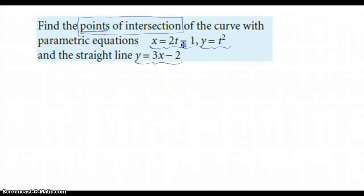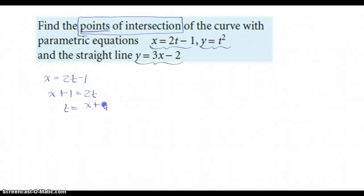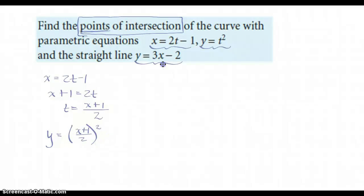Here's a set of parametric equations that we have already eliminated the parameter for, so this won't be that difficult. The first step is to eliminate the parameter — taking one of the functions, putting t in terms of that variable, and then substituting into the other parametric equation everywhere I see a t. So here's one Cartesian curve.